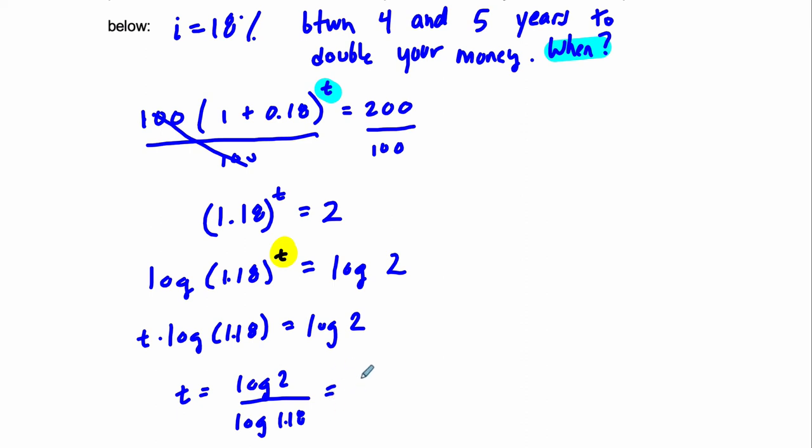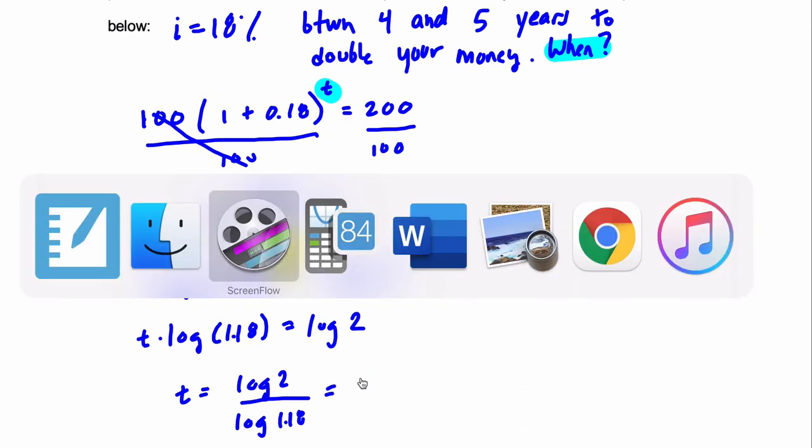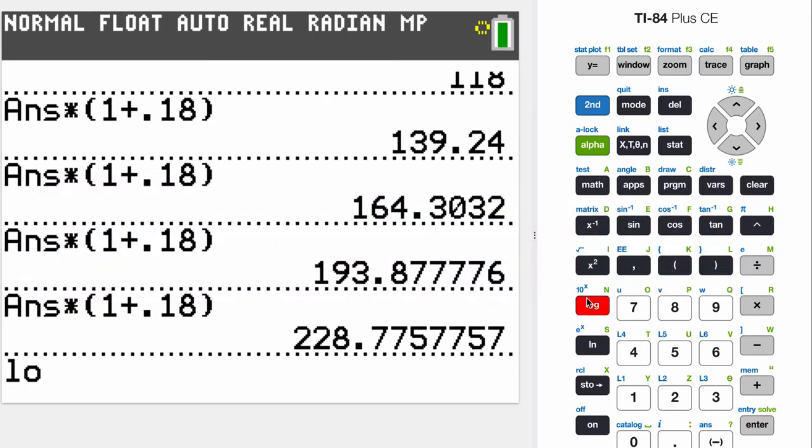And this will give us a more precise measure of what's going on here. So let me show you that. So in this case, it would be the log button right here of 2 divided by the log of 1.18. And then just hit enter.